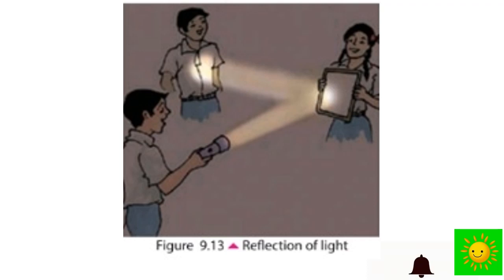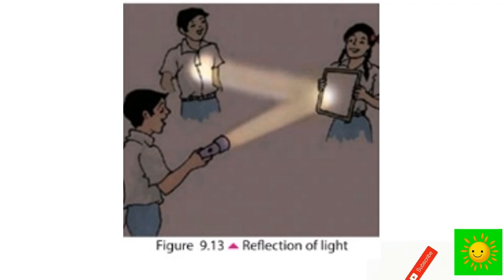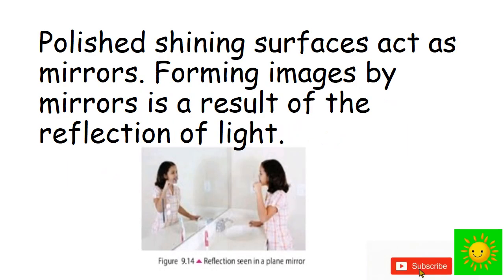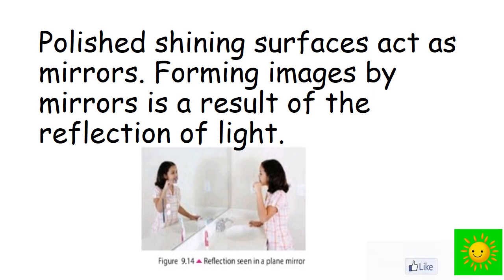Light reflects well from smooth polished shining surfaces. Polished shining surfaces act as mirrors. Forming images by mirrors is a result of the reflection of light.